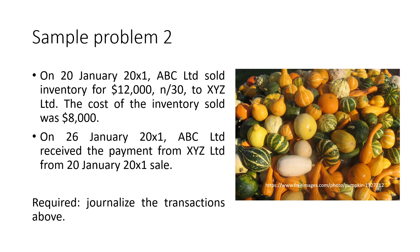In sample problem number two, on 20th January 20X1, ABC Limited sold inventory for $12,000, N30. When you see N30, that signifies that the sale is on account or on credit. The cost of inventory sold was $8,000. Then afterwards, on 26th January 20X1, ABC Limited received payment from XYZ from the 20th January 20X1 sale. We are required to journalize the transactions.